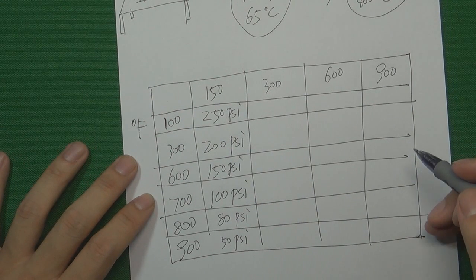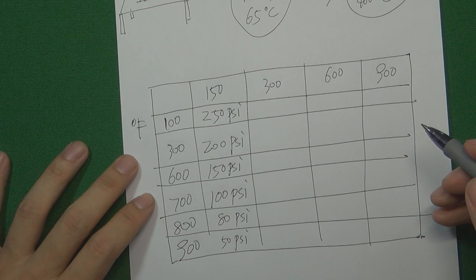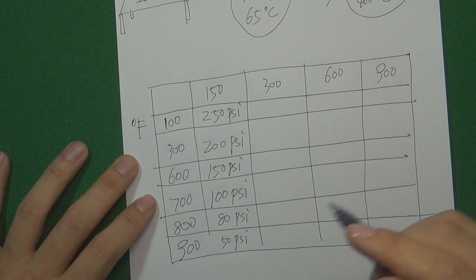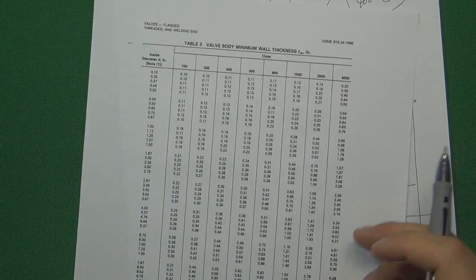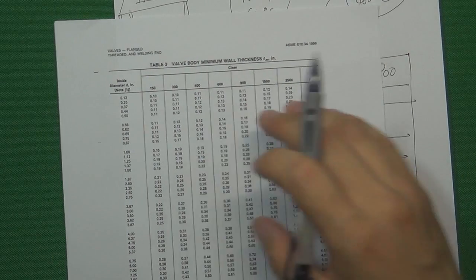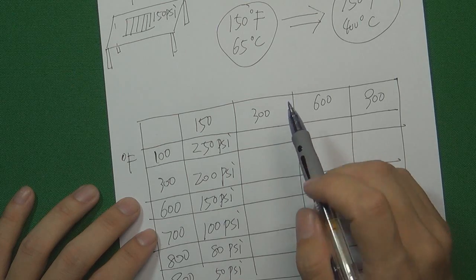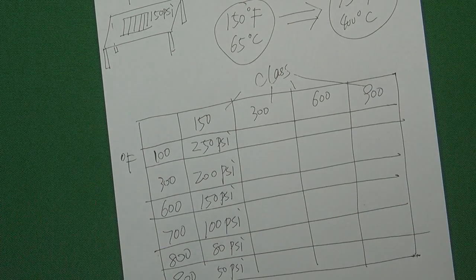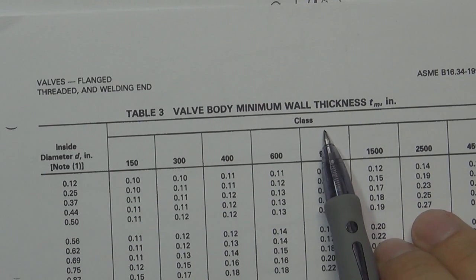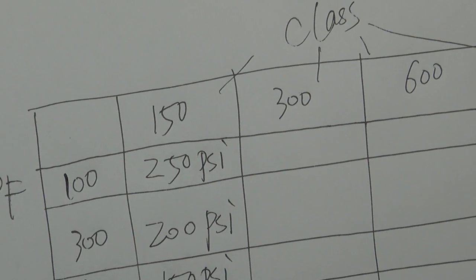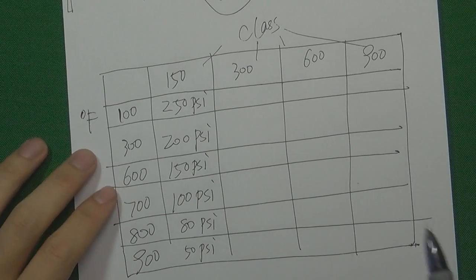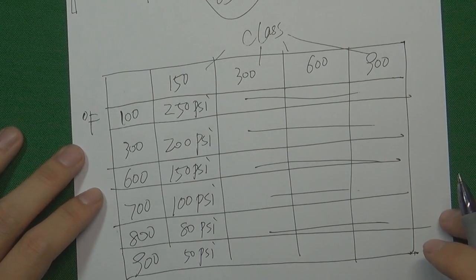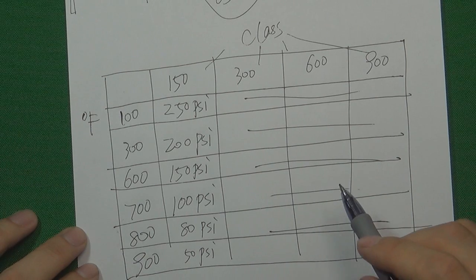So in ASME B16.34, the pioneer engineers already designed this kind of table to tell the engineer — whether designing or choosing a valve — the real pressure that the valve can hold. That is the reason why we don't put 'psi' behind the class number. We just call this number a 'class' — not a psi value. The real pressure this valve can hold requires you to check the temperature-pressure rating table. Let's look at the real ASME B16.34 temperature-pressure rating table.